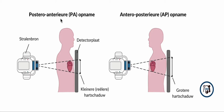In this video, I want to briefly discuss the difference between a posterior anterior frontal chest x-ray and an anterior posterior frontal chest x-ray. Usually, the PA technique is preferred. The reason for that is that the x-ray source is behind the patient and the belly and chest of the patient is towards the detector plate, as opposed to an AP view, which is exactly in reverse.